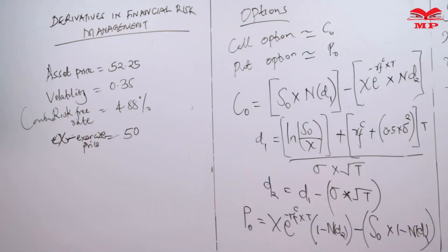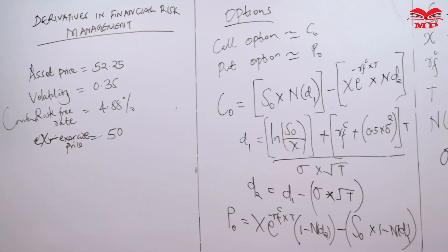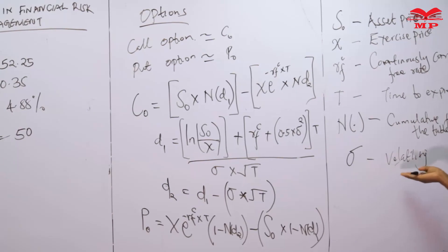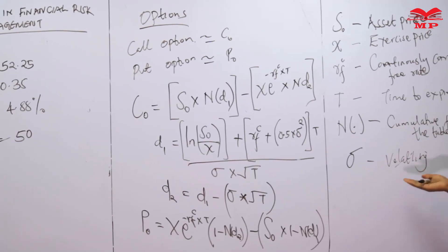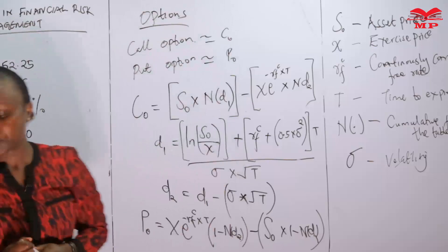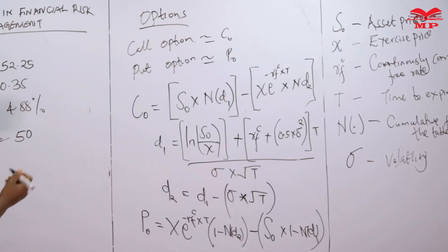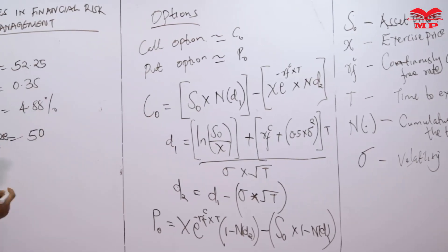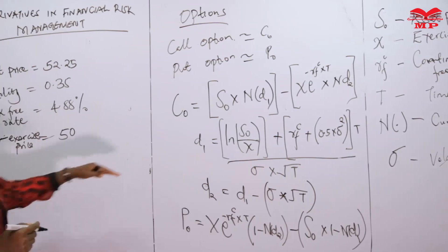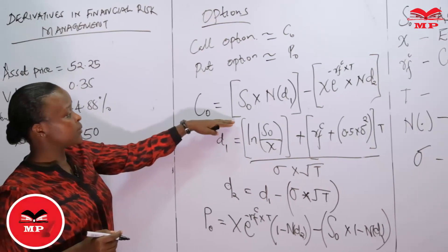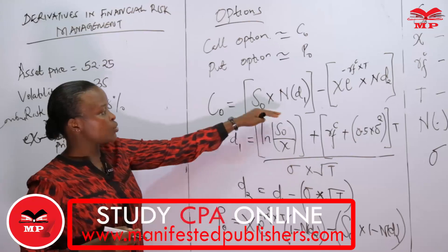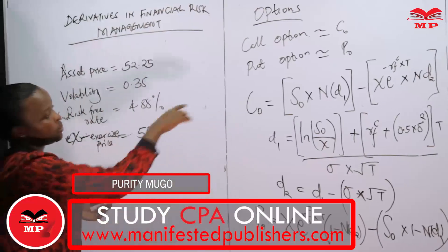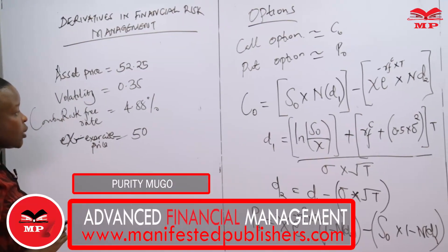Volatility refers to the standard deviation — how does it vary, what is the standard deviation. We'll start by determining the first thing we do using these variables in our example to value the call option. The formula for the call option requires us to first determine D1 and D2 before inserting them into the call option formula.